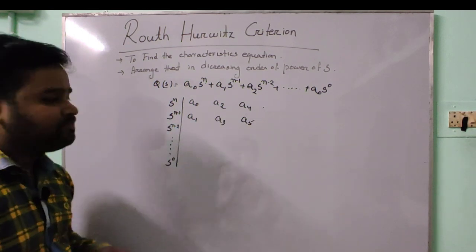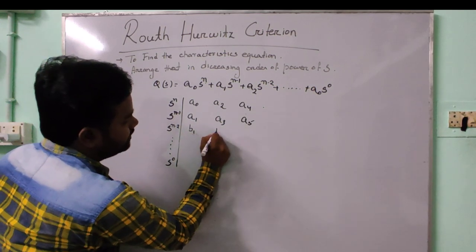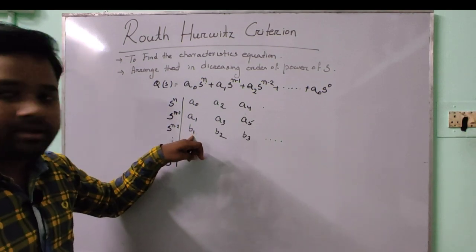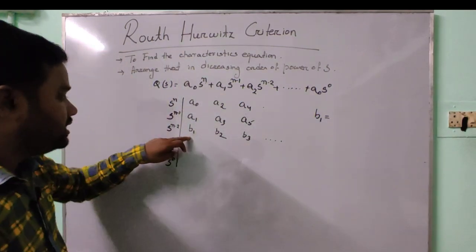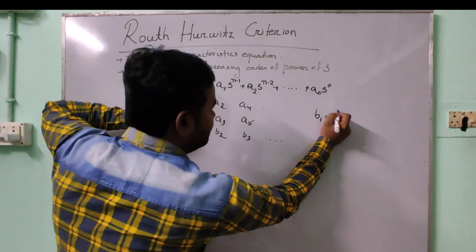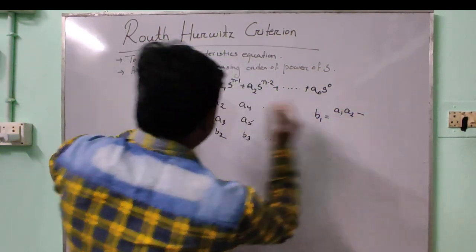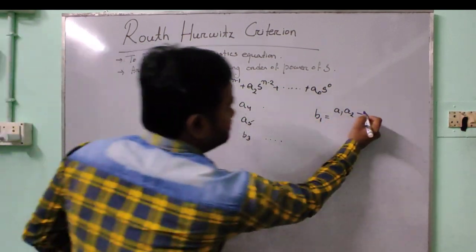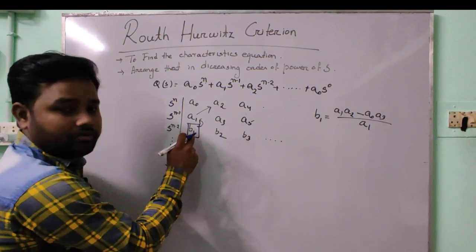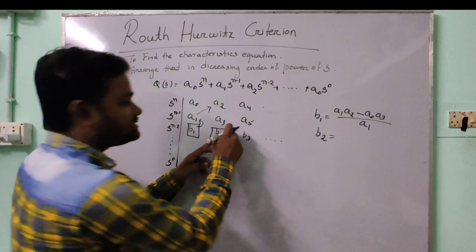For the third row, we write values b₁, b₂, b₃, and so on. The formula for b₁ is: b₁ equals (a₁ times a₂ minus a₀ times a₃) divided by a₁. We cross-multiply the upper two rows and divide by the first element of the second row. Similarly, b₂ equals (a₁ times a₄ minus a₀ times a₅) divided by a₁.